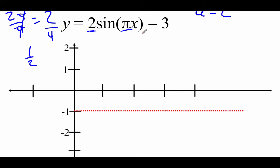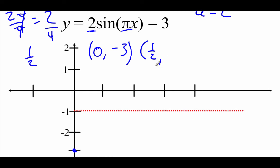Starting at x = 0: π times 0 is 0, sine of 0 is 0, times 2 is 0, minus 3 gives negative 3. So at x = 0 we're at negative 3. Adding 1/2, our next x is 1/2. π times 1/2 is π/2, sine of π/2 is 1, times 2 is 2, minus 3 gives negative 1. So at x = 1/2 we're at negative 1.